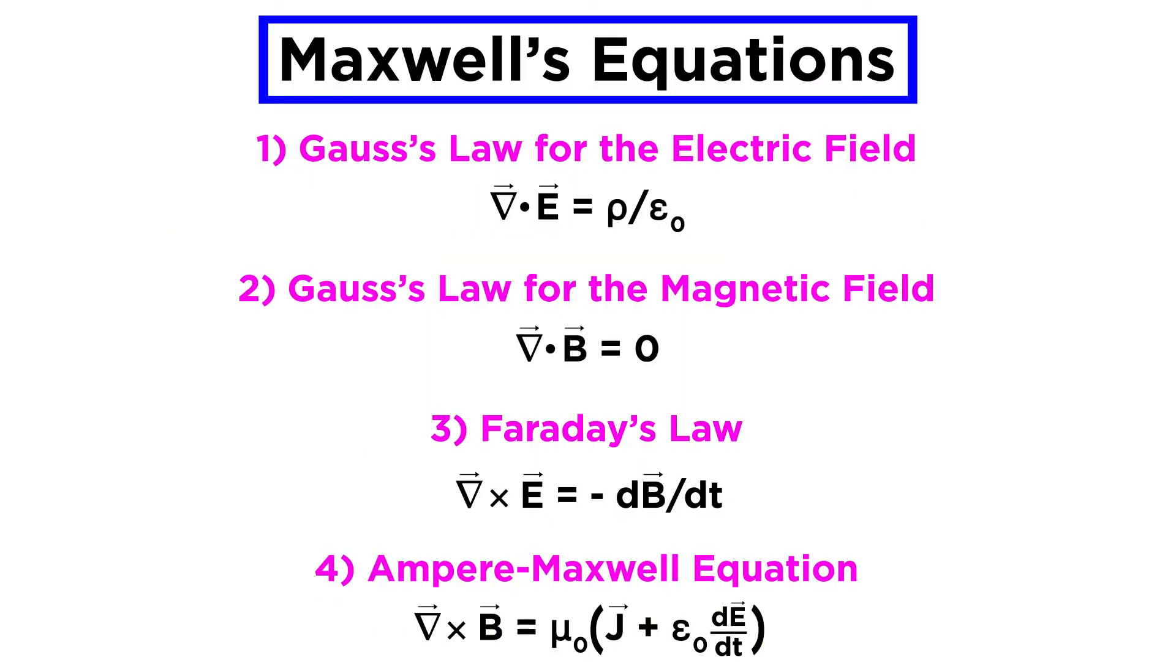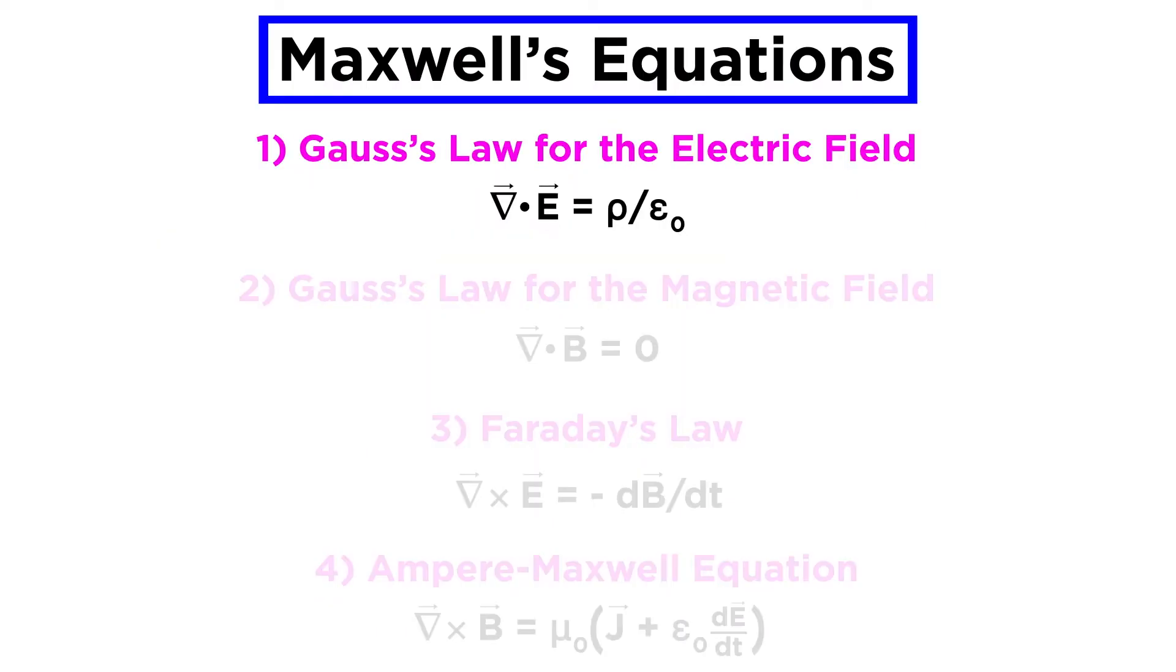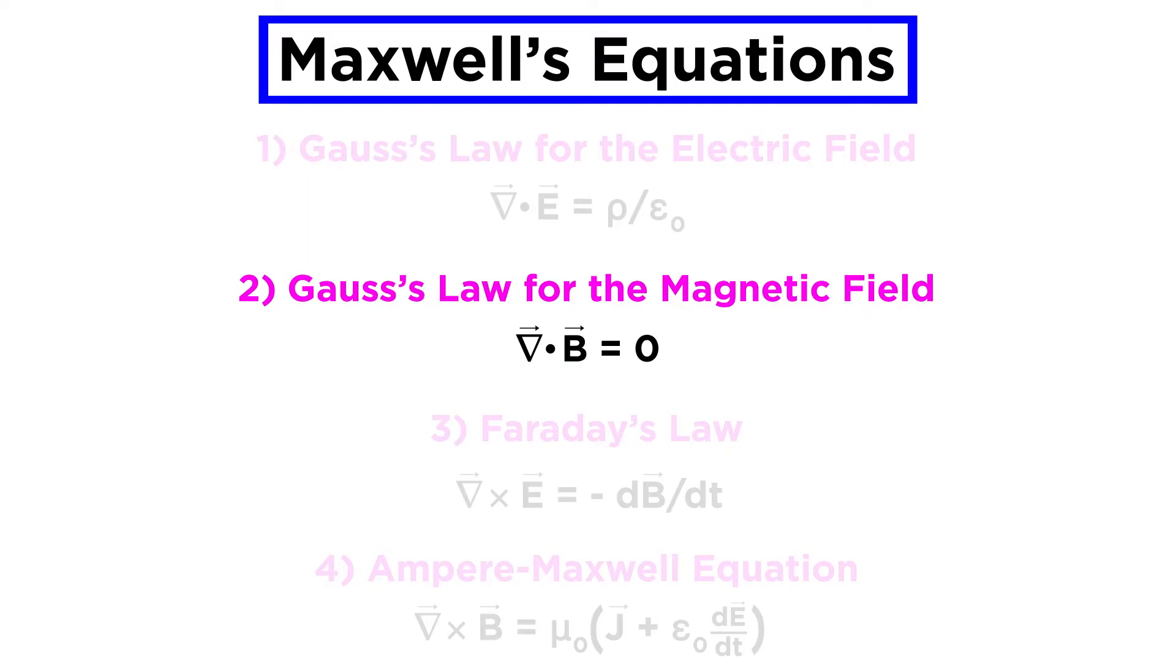In the previous tutorial we introduced Maxwell's equations and examined the first of them in some depth, Gauss's law for the electric field. In this tutorial we will cover the second of Maxwell's equations, which is Gauss's law for the magnetic field.